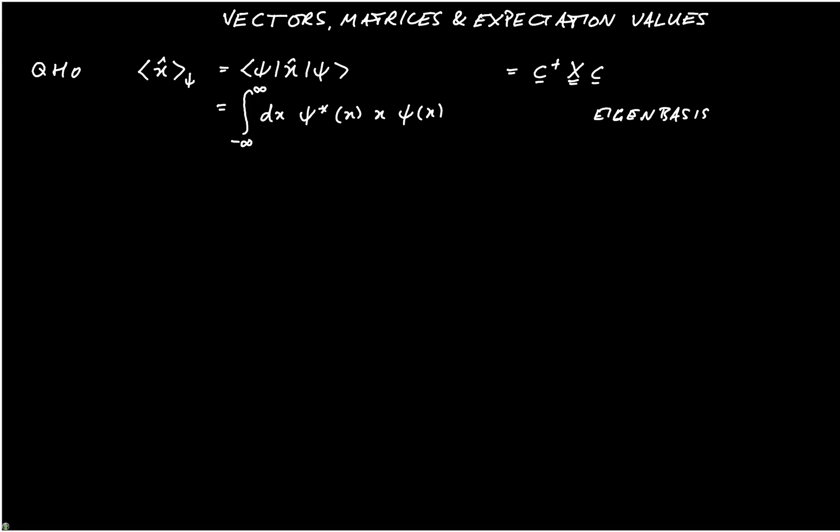So let's consider a state psi, which is written as one over root 3 times ket 0 plus root 2 over root 3 times the ket of 1. So what that means is that we're taking two of the eigenstates of the quantum harmonic oscillator, the one where n equals 0 and the one where n equals 1, and we're combining them.